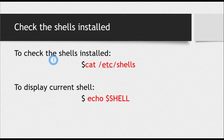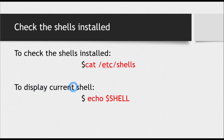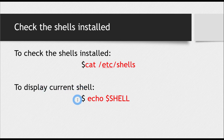If you want to check which shells are installed in your system, the command is cat followed by the path /etc/shells. This will tell you which shells are currently installed. And if you want to display the current shell, you can use: echo $SHELL. If you run this command right now, the default shell — bash — will be shown. It shows the current shell which is in use at that time.